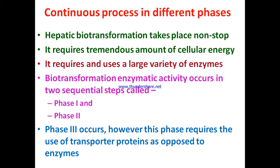A large variety of enzymes are used for biotransformation. Biotransformation enzymatic activity occurs in two sequential steps called phase one and phase two. Phase three also occurs, but enzyme use is quite limited — instead, transporter proteins are used.